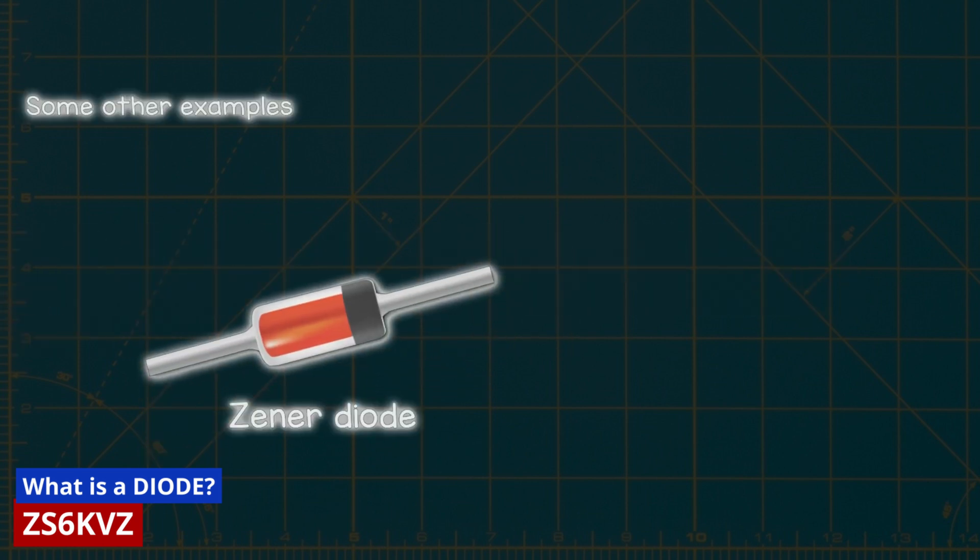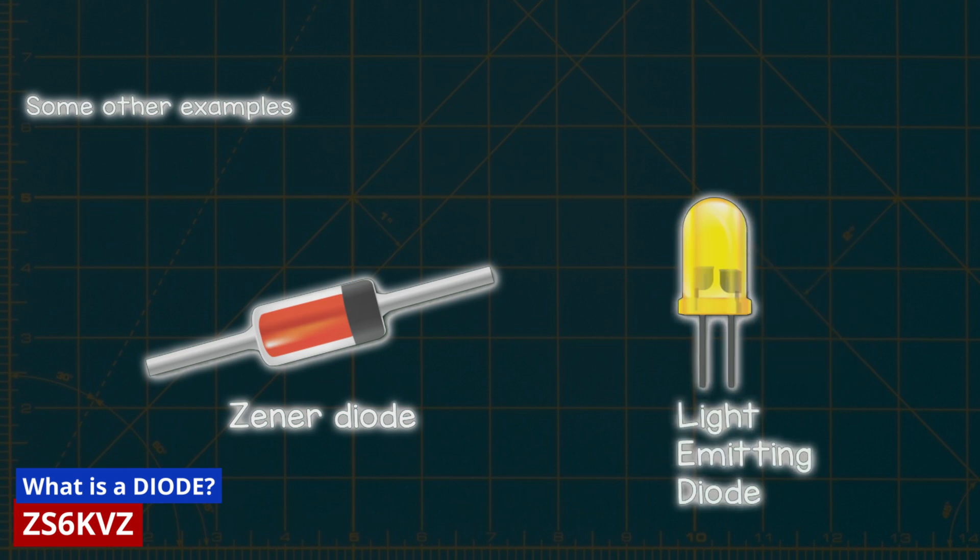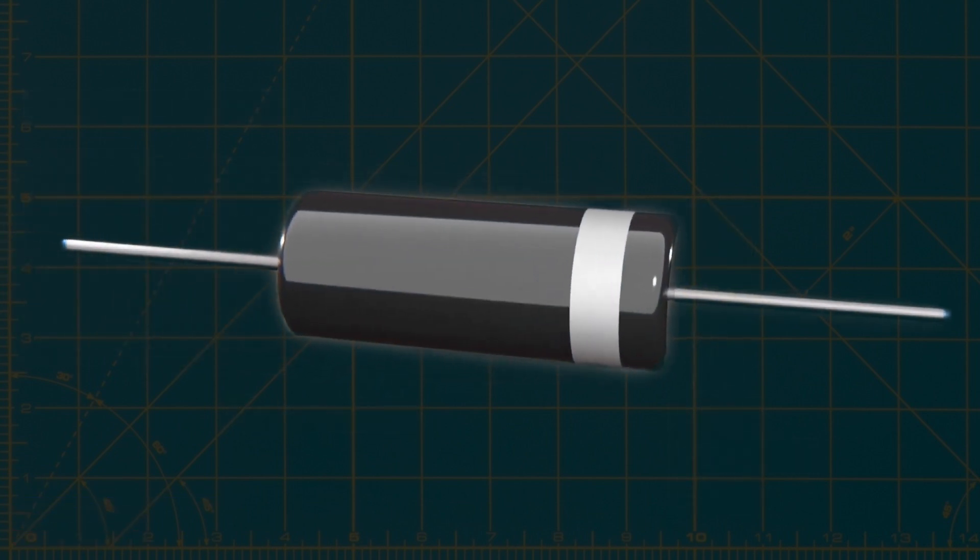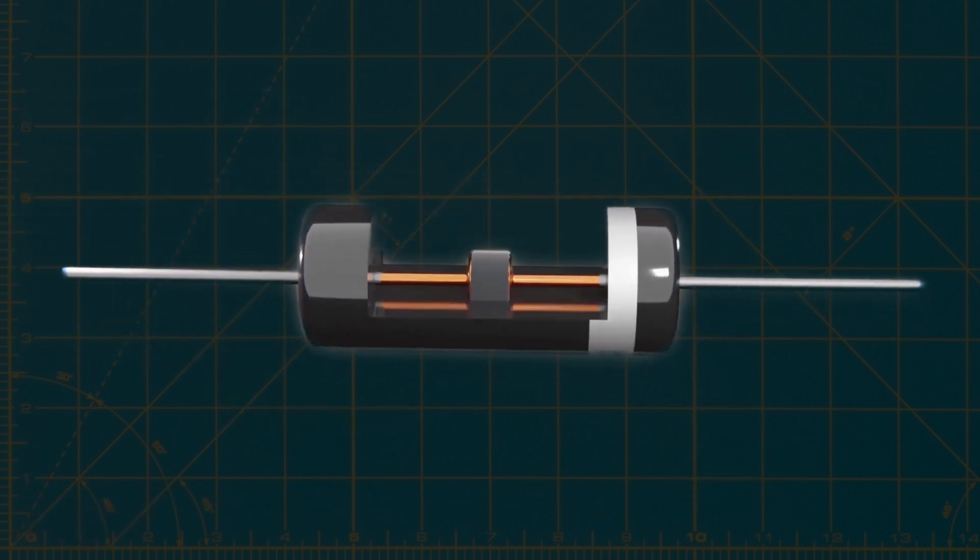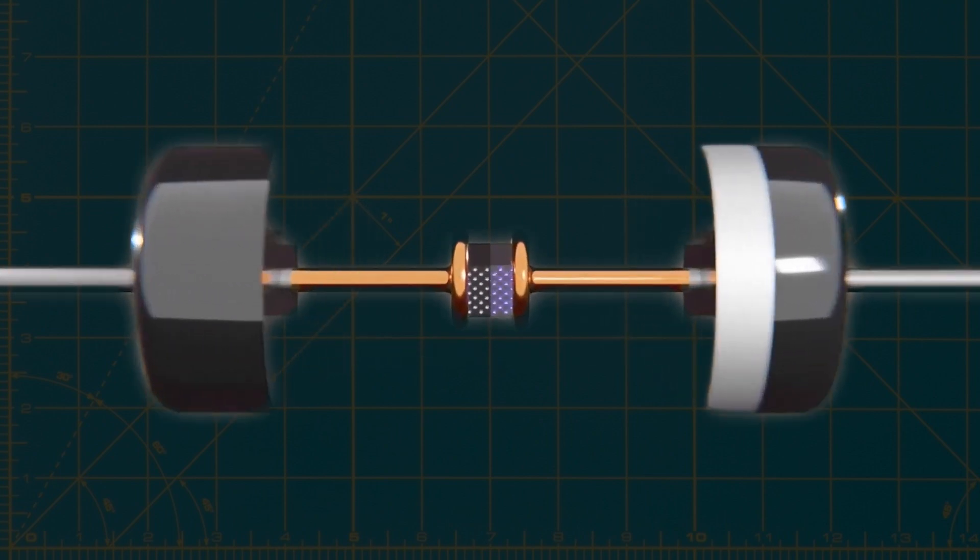There are also other types of diodes, such as the Zener diode or the light-emitting diode (LED), but we won't be covering those in this video. You may have used a diode before, but do you truly understand how it works internally?